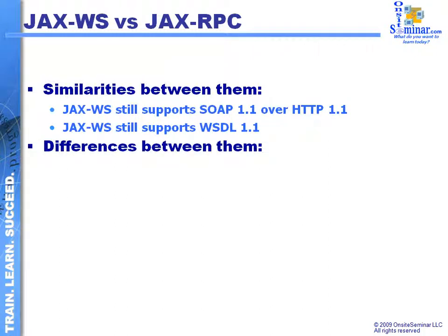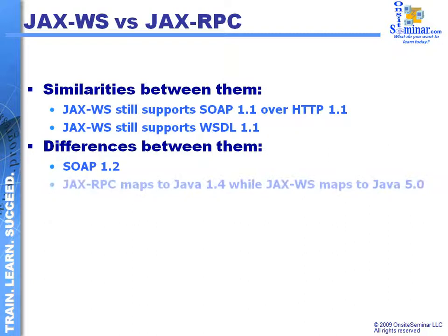As far as the differences go, there are some important distinctions. With JAX-WS, there is a new version of SOAP 1.2 that is only supported by the JAX-WS environment. Also, JAX-RPC was mapping to Java version 1.4, while JAX-WS takes advantage of the new efficiencies and annotation aspects of the Java 5 environment.